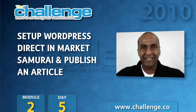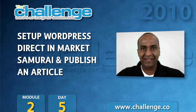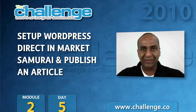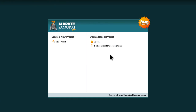Hi everyone. In this video I'd like to show you how to enter your WordPress Direct details into the Publish Content module of Market Samurai and how to publish an article. Here we have the Market Samurai startup screen and for this example I'm going to revisit my digital photography lighting project.